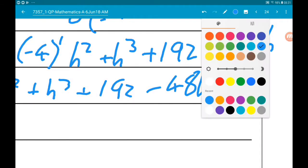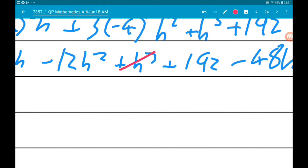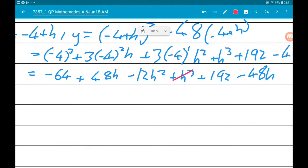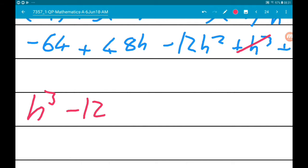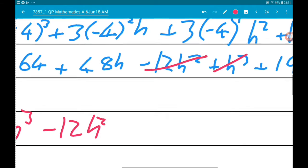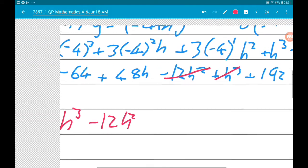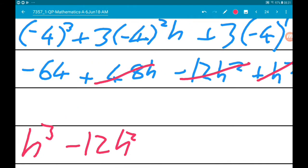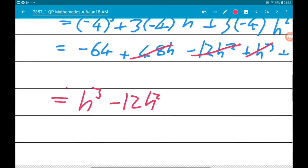Let's collect like terms. We got 1h cubed. We got minus 12h squared. We got plus 48h minus 48h, so those two cancel each other out. Then we got 192 minus 64 which is 128.